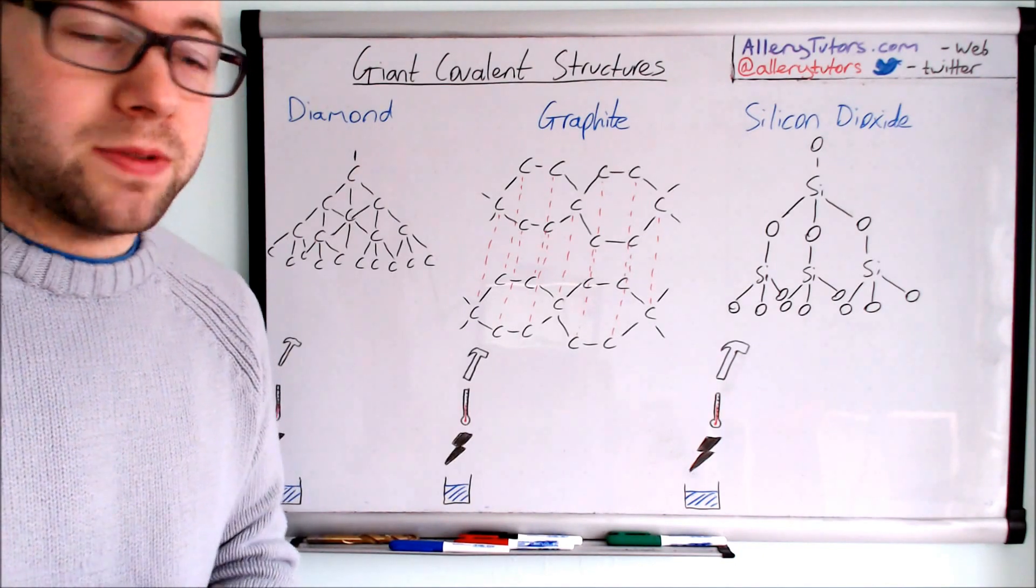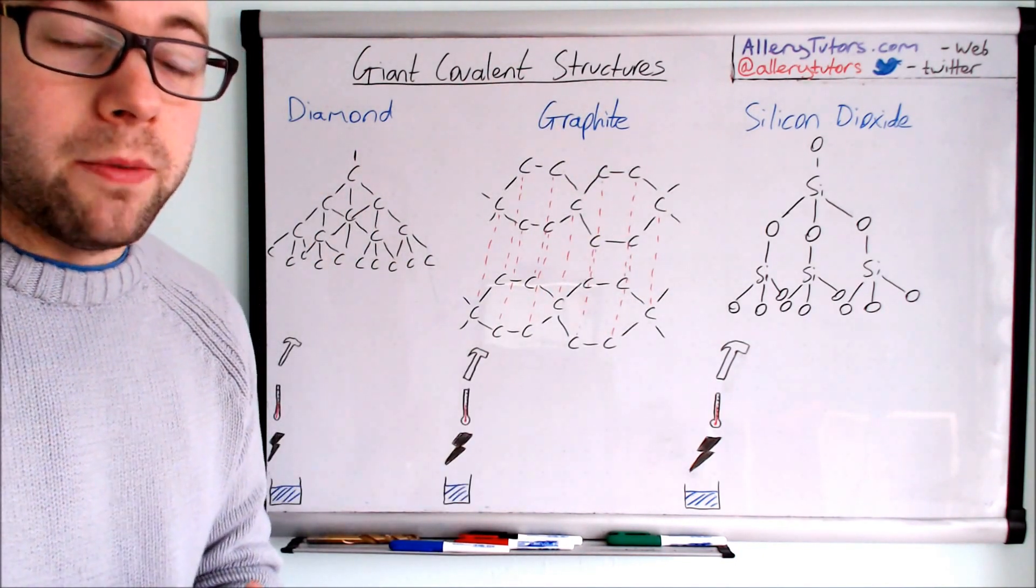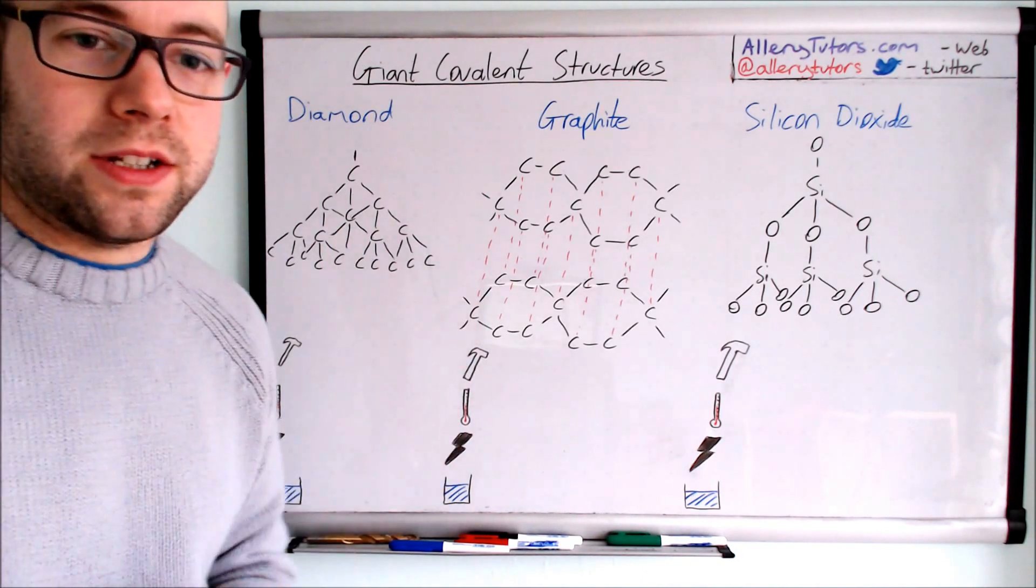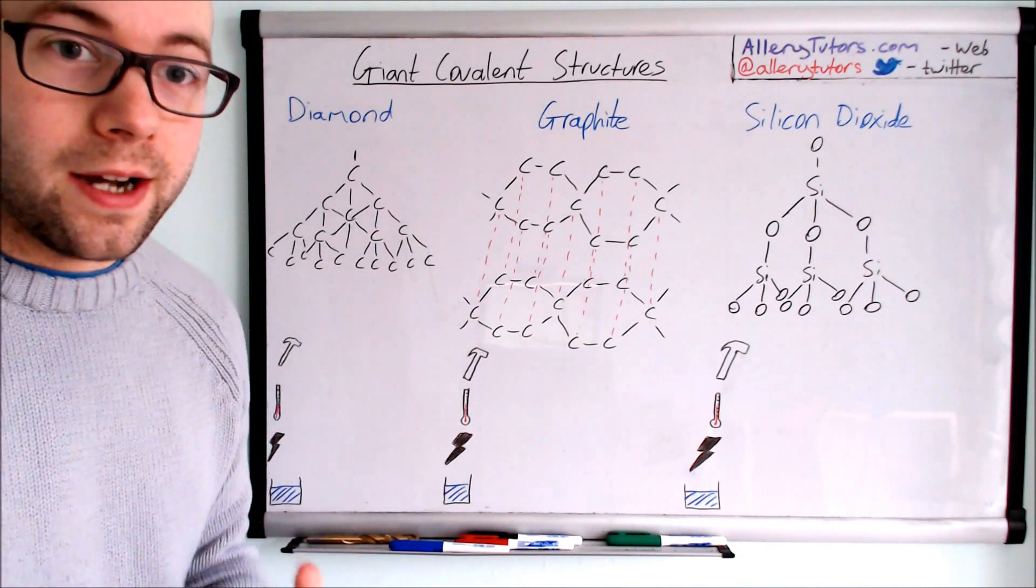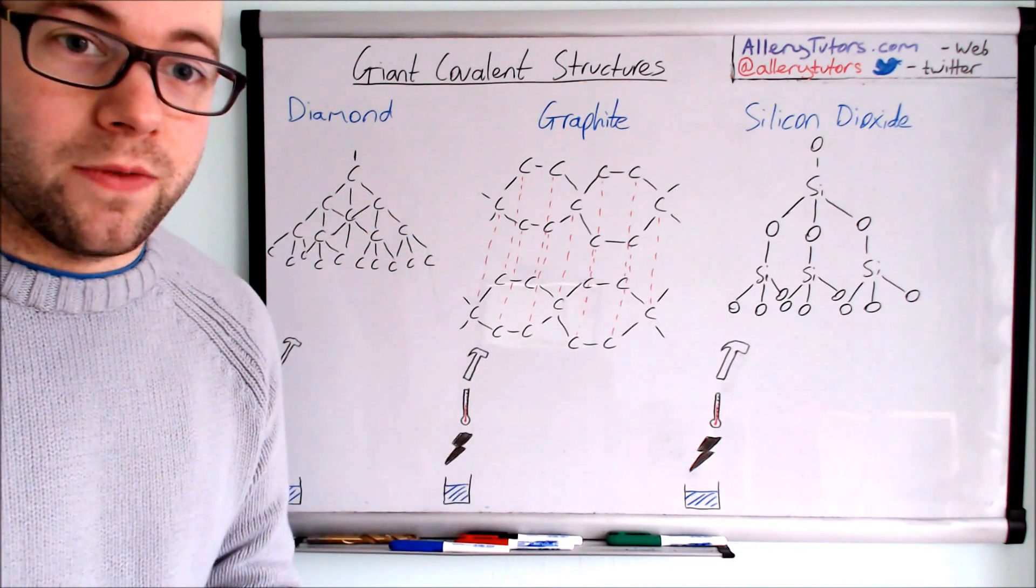We've got three different types: diamond, graphite, and silicon dioxide. I'm going to look at these first two because they all contain carbon and we describe these as allotropes of each other.